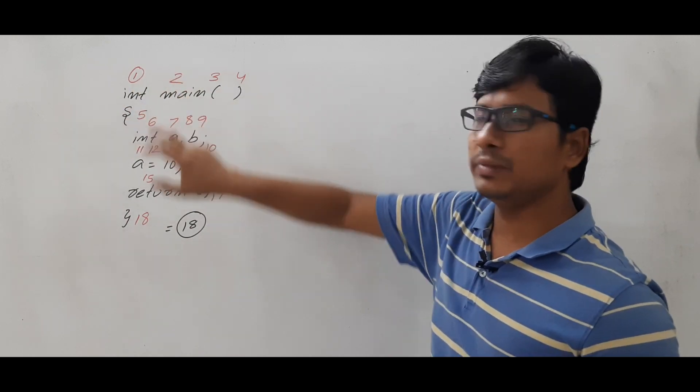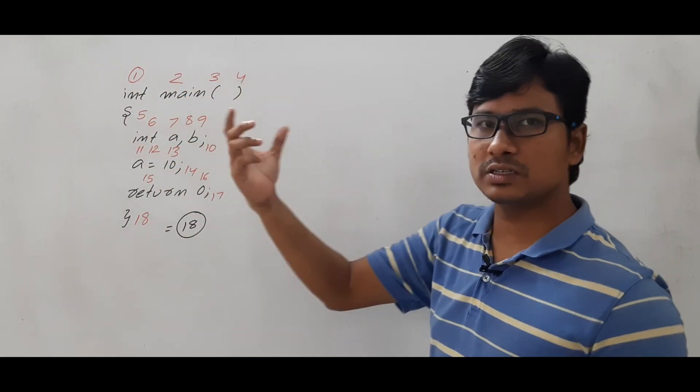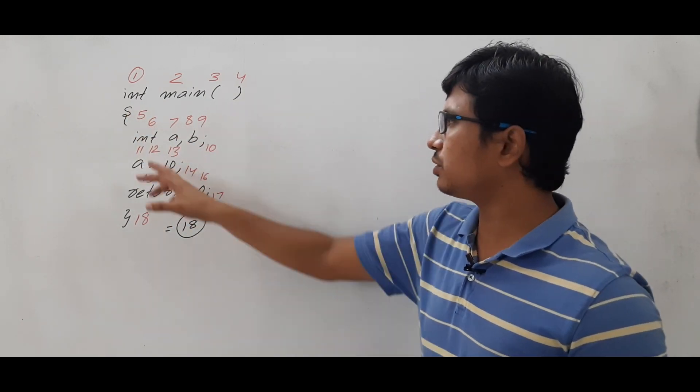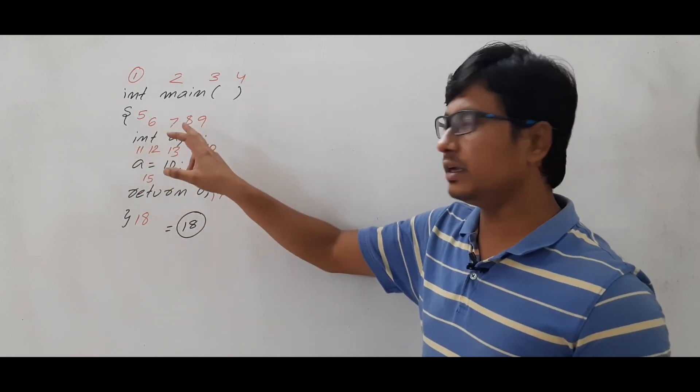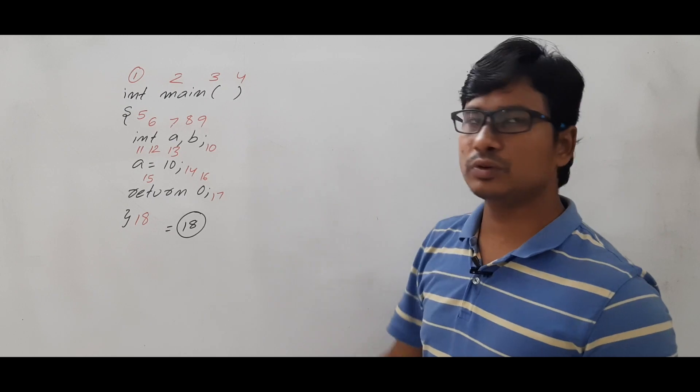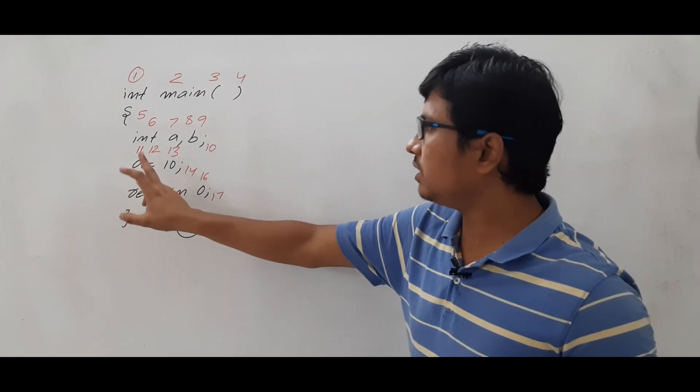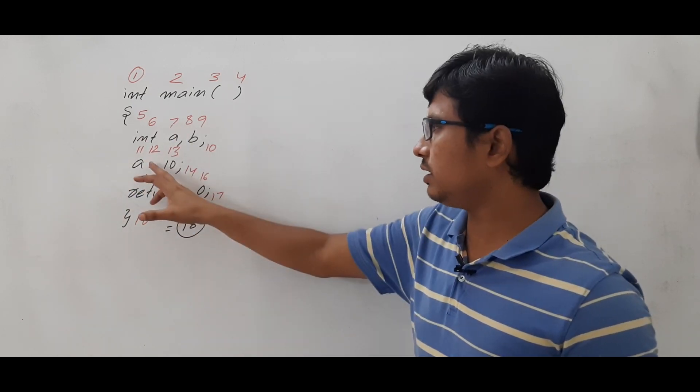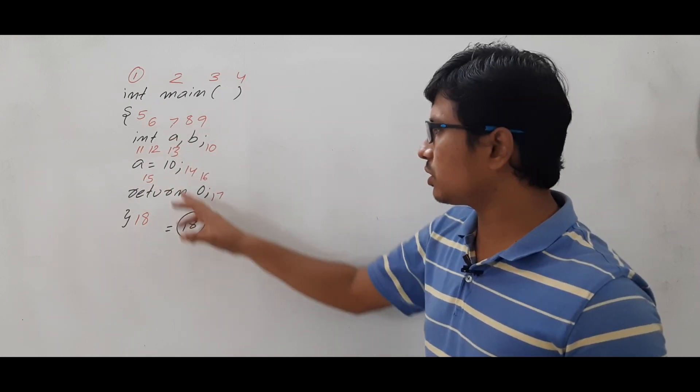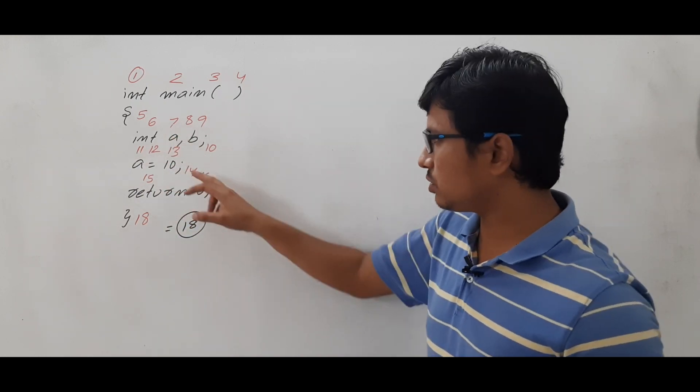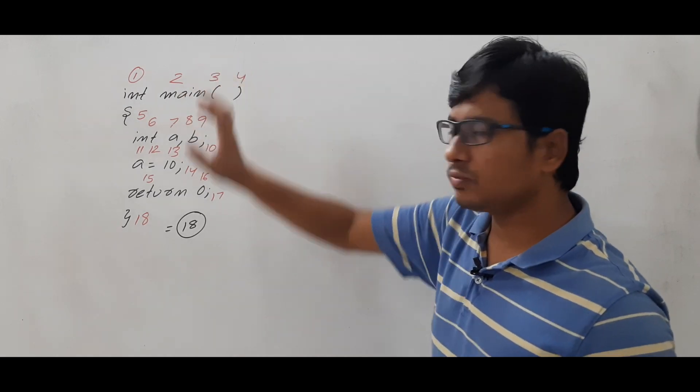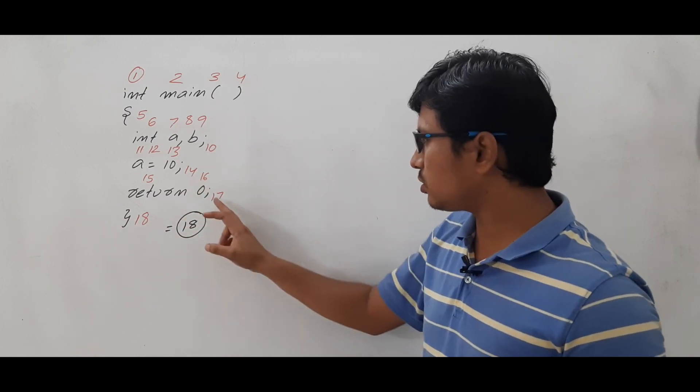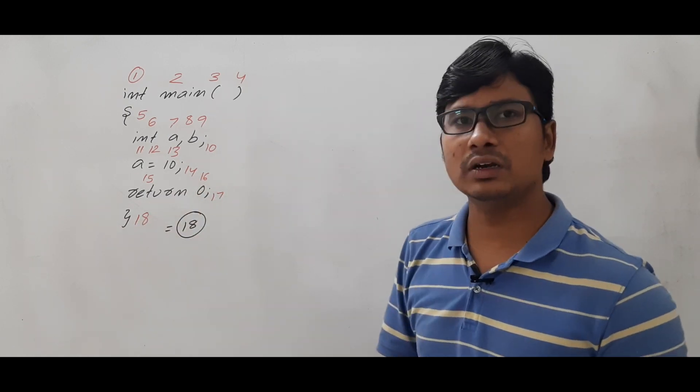Are you able to understand? So int is one token, main is another token, open braces and closed braces are two different tokens, and open curly braces and closed curly braces are two different tokens. Int is another token, a comma b semicolon - so totally I got till here 10. Then again, you don't think that a we have already used so it is not another token - it is another token. Equal to is an operator - a token. 10 is a constant which is a token. Again the semicolon is another token - 14 tokens we got. Then return is 15, 0 is a constant - another token, 17, 18 tokens. So totally we got 18 tokens.